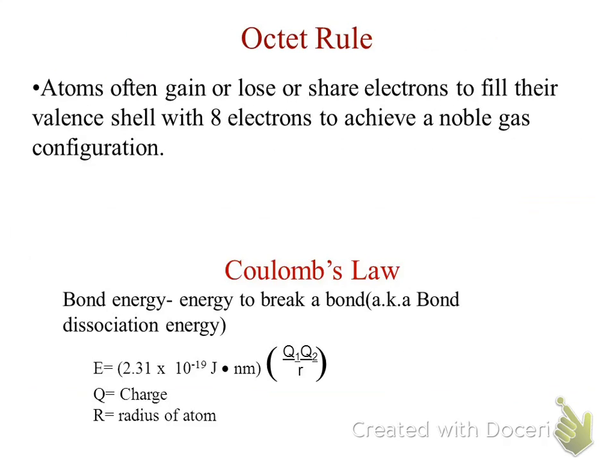Now, the octet rule. This is the goal of the atoms — it wants to be stable. One of the things that will help it to be stable is to have the outer valence shell completely full. We say that it wants to achieve noble gas electron configuration, meaning it's going to gain or lose electrons in order to reach this status. Don't think of it as actually making the decision — it's going to be based on the situation when it's put into a bonding situation, and it may lose or gain accordingly.